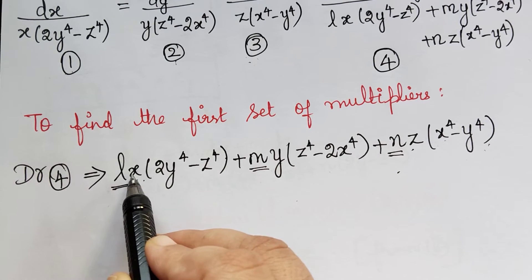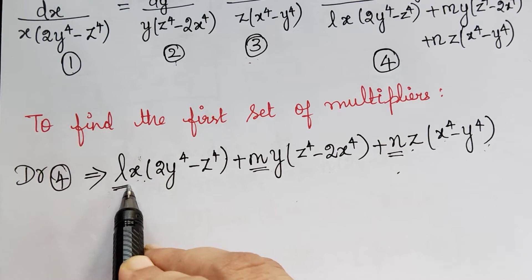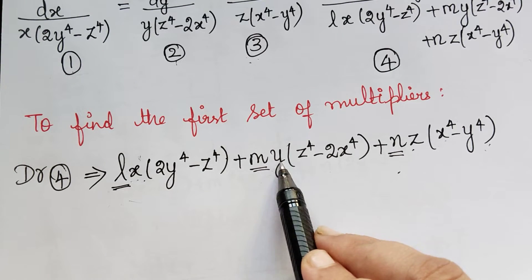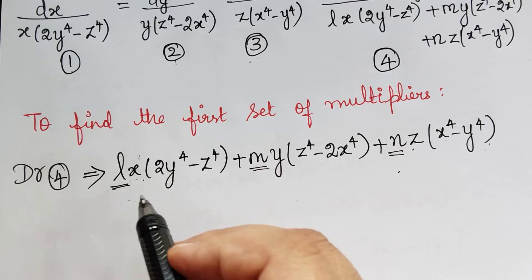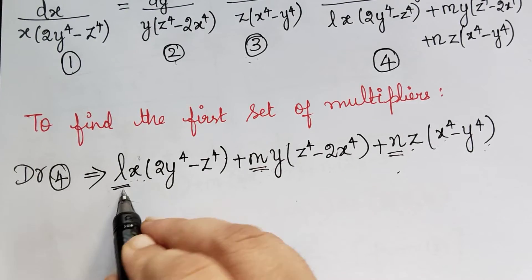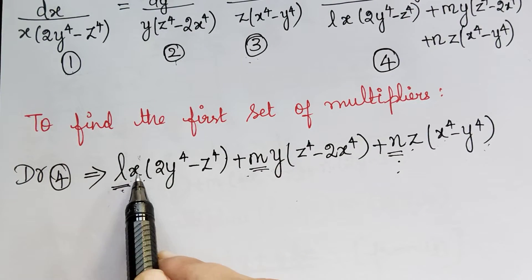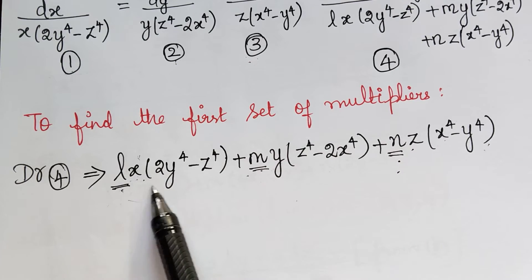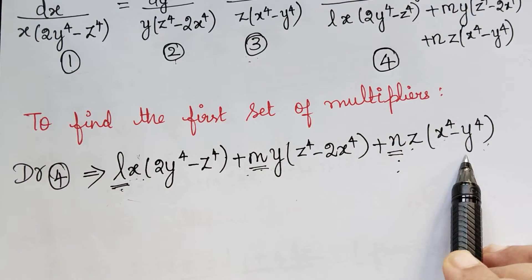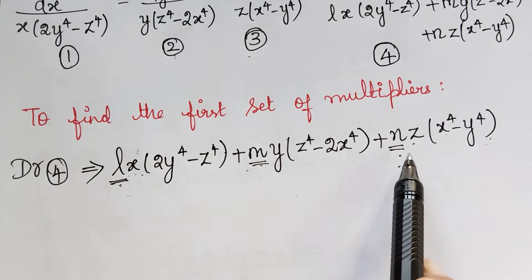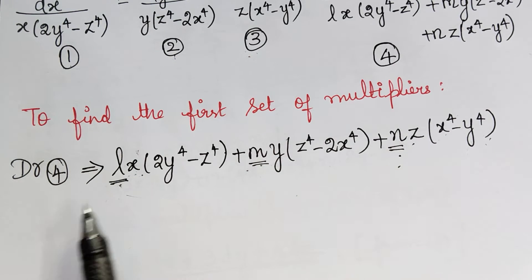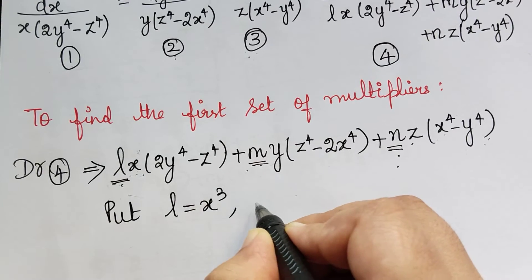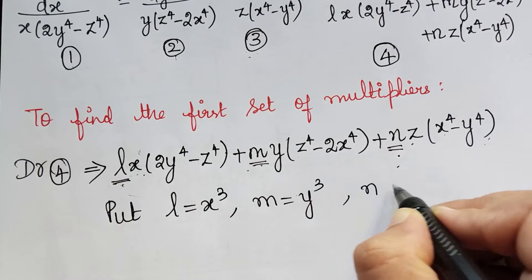Already we have x, so x to the power 1. In order to make the power of x equal to 4, we have to multiply by x³. Similarly, to make the power of y equal to 4, multiply by y³, and multiply by z³ for z. So we choose multipliers L, M, and N as x³, y³, and z³, so that when multiplied with x, y, and z their powers become 4 and the denominator can be made 0. Put L = x³, M = y³, and N = z³.